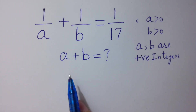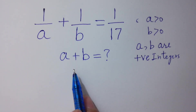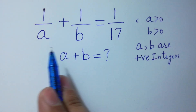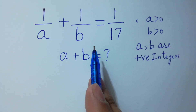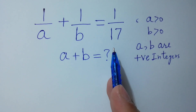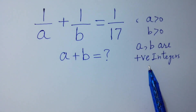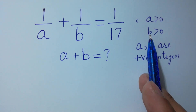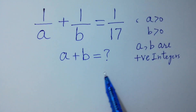Hello friends. Find the value of a plus b if 1 over a plus 1 over b equals 1 over 17, where a and b are positive integers, a greater than 0 and b greater than 0. Let's have a solution here.